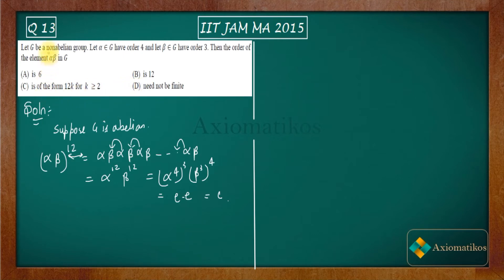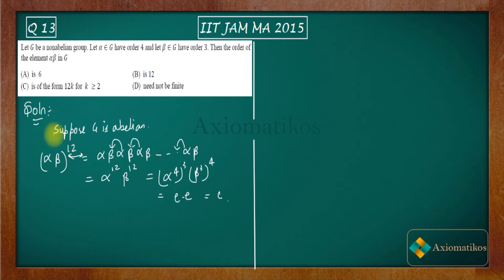Now the non-abelian condition is given, and this is a standard result: for a non-abelian group, even if alpha has finite order and beta has finite order, their product need not have finite order. So directly from here, D is the correct answer — it can happen that the product alpha beta has infinite order.